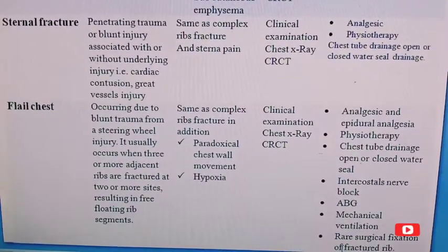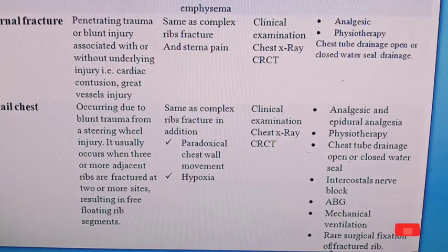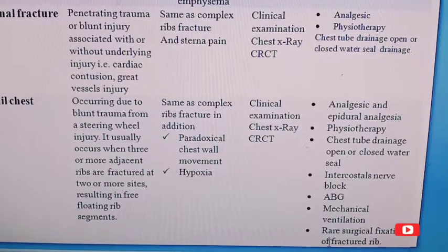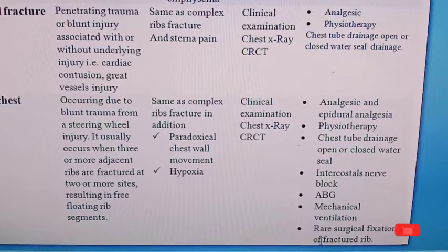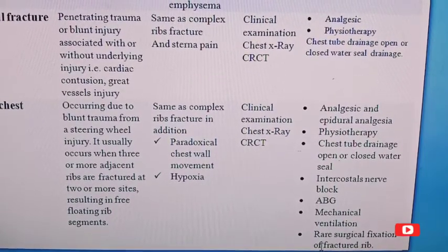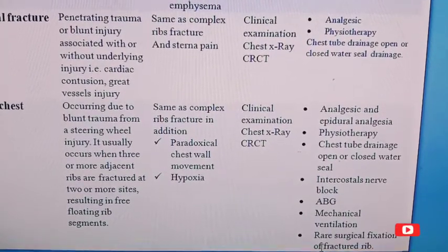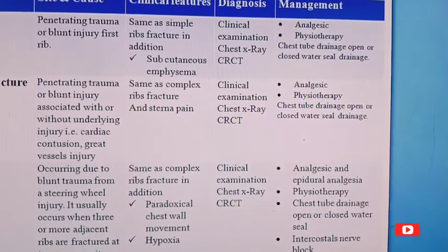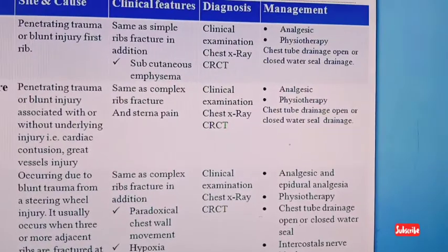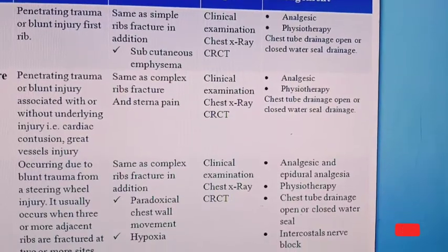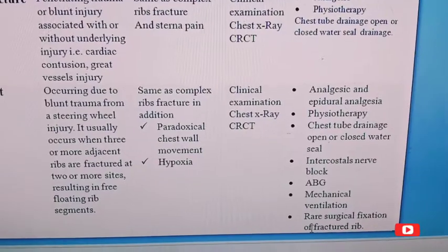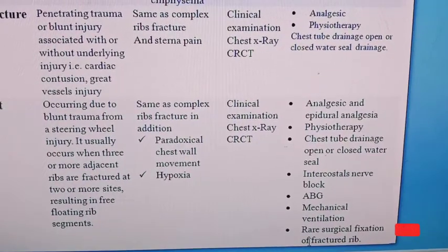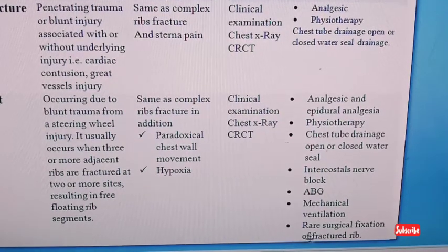The most important and critical chest injury is flail chest. It occurs due to blunt trauma, commonly from a steering wheel injury. It usually occurs when three or more adjacent ribs are fractured at two or more sites, resulting in a free-floating rib segment. Clinical manifestations include those of complex rib fracture plus paradoxical chest wall movement and hypoxia. Diagnosis is by clinical examination, history taking, chest X-ray, and CT scan. Management includes pain management, epidural analgesia, physiotherapy, chest tube drainage, open or closed water seal drainage, intercostal nerve block, ABG analysis, mechanical ventilation, and in rare cases surgical fixation of fractured ribs.